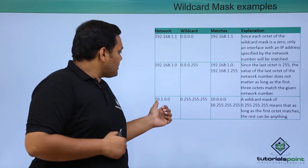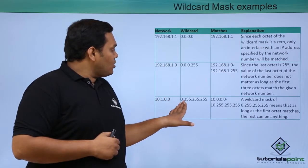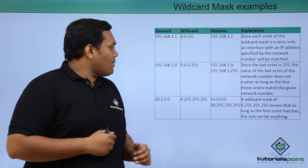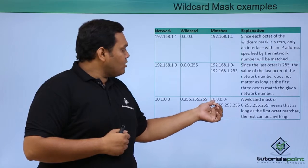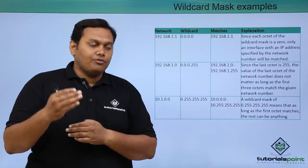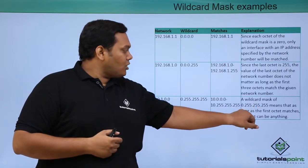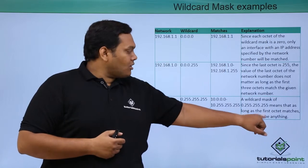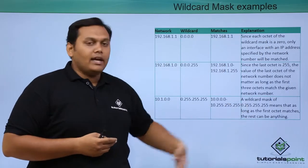For the network 10.1.0.0, the wildcard mask is 0.255.255.255, which matches the range 10.0.0.0 to 10.255.255.255. A wildcard mask of 0.255.255.255 means that as long as the first octet matches, the rest does not matter.